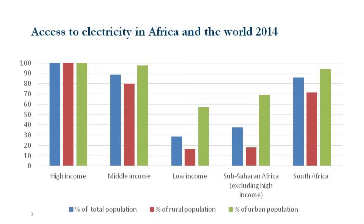Access to electricity in Africa and the world: statistics from the International Energy Agency for 2014. As an academic I don't always use the latest data since it may be re-evaluated. The blue represents percentage of total population with access to electricity, red is rural population, and green is urban. High-income countries show 100% access in all categories. Middle-income countries show urban near 100% but rural gaps. Low-income countries show not even 30% with access, and urban passes the 50% mark — meaning every second household in a city has electricity, which is astounding and alarming.